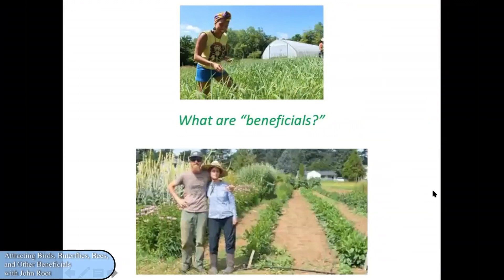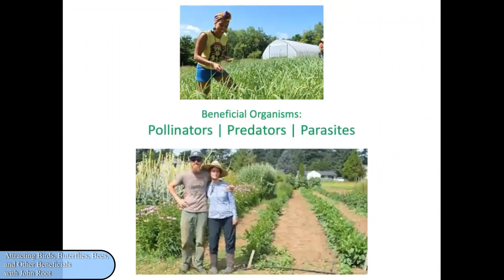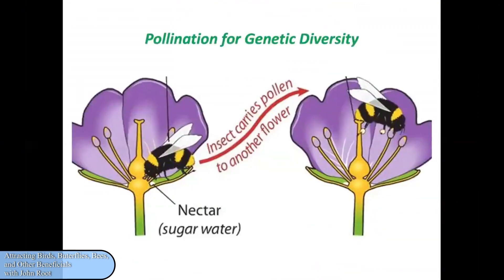So what are beneficials? The beneficials in the title of this program refer to those organisms that help farmers and gardeners grow the food and other crops that we need. Beneficials include pollinators, predators, and parasites — the three Ps. Pollination is essential for genetic diversity. If it wasn't for pollinators bringing pollen from one plant to another, every seed would be identical, every plant would be identical to its parents. The pollinators do this inadvertently — they're simply attracted to the nectar and pollen they collect and just happen to bring pollen from one flower to the next.